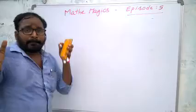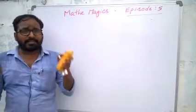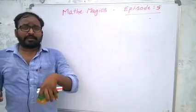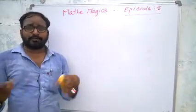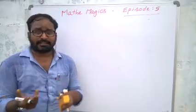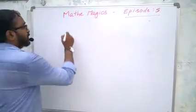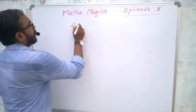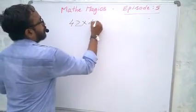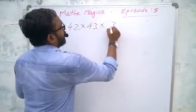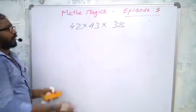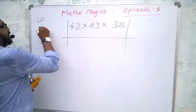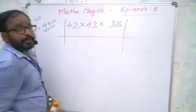Now we deal with base method. Already we learned base methods by using 100, 1000, 10,000, like that. And here, different methods, different bases like 40, 50, 60, or 500, 600. For example, if you want to find the product of 42 into 43 into 38, how do we calculate? Here the base is 40, 40 in the sense 4 into 10.